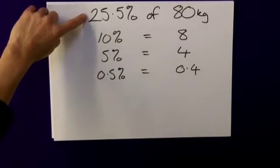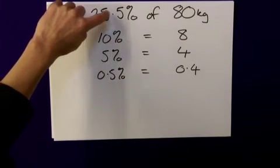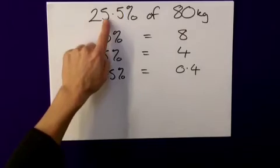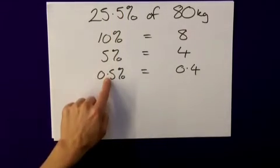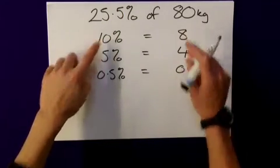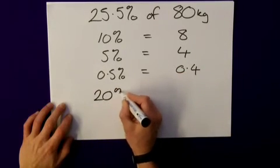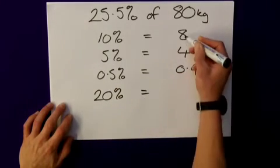Breaking this down, then, I need a 20%, a 5%, and a 0.5%. Well, I've got the 5%. I've got the 0.5. I need 20%, which is simply double this. So my 20% is equal to 16.